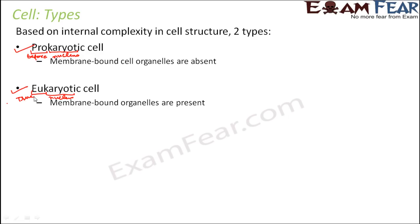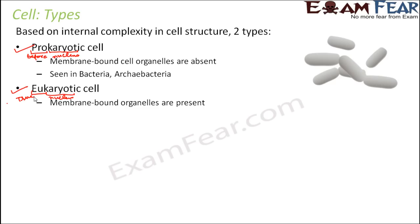So prokaryotic cell and eukaryotic cell — now in this lesson we are going to spend a lot of time understanding the structure of both. Prokaryotic cells are generally seen in smaller organisms like bacteria and archaebacteria, where there are no specific organelles. Whereas eukaryotic cells are seen in all the higher kingdoms: Protista, Fungi, Plantae, and Animalia.